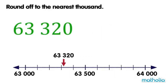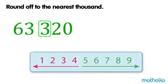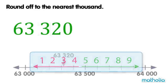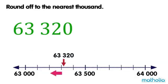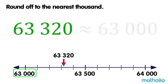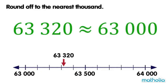Let's round off 63,320 to the nearest 1,000. When rounding to the nearest 1,000, we look at the digit in the hundreds place. The digit in the hundreds place is 3. Digits that are 4 or less are rounded down. So, 63,320 is rounded down to 63,000. To the nearest 1,000, 63,320 is approximately equal to 63,000.